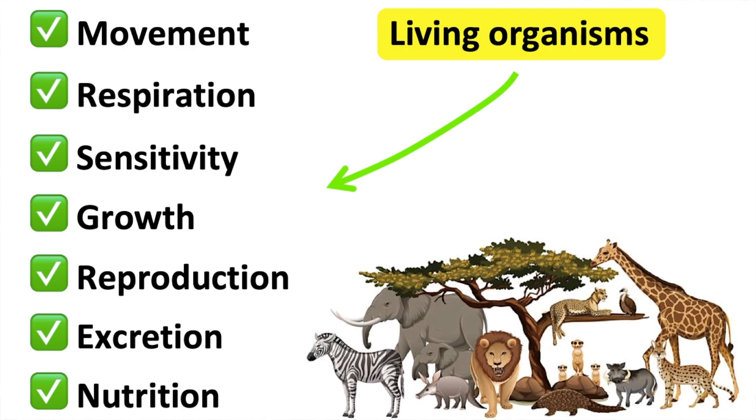Movement. All living organisms should be able to move. Respiration. This is the process in which living organisms get energy. Sensitivity. This is where living organisms can interact and detect changes in the environment using their senses.